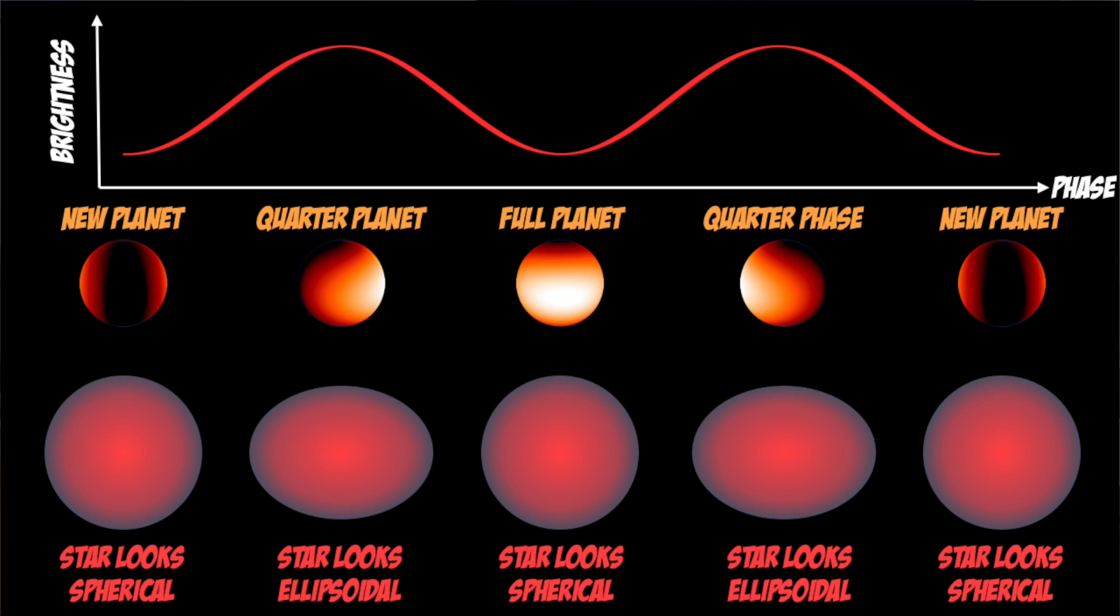So in one full orbit of the planet, we would see two of these brightening effects. The minimum would occur when the planet's at new phase and at full phase, since that's when the star appears to be a sphere, and two brightening effects at the two quarter phases.